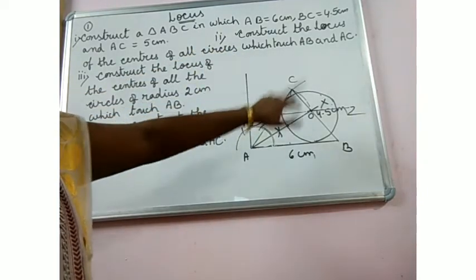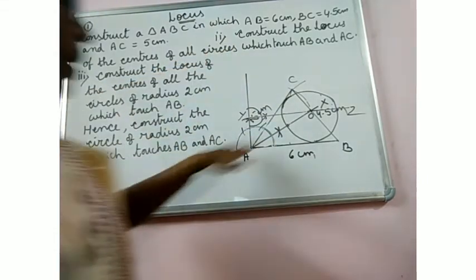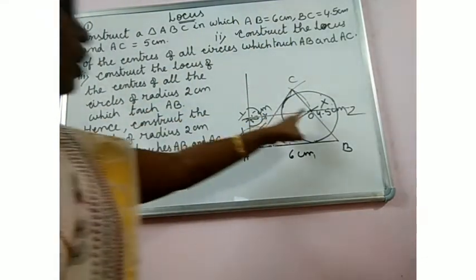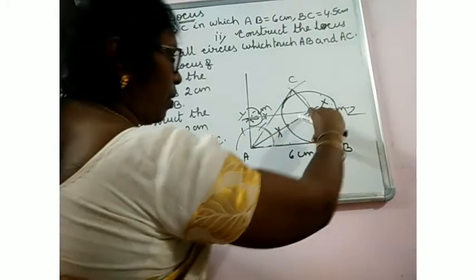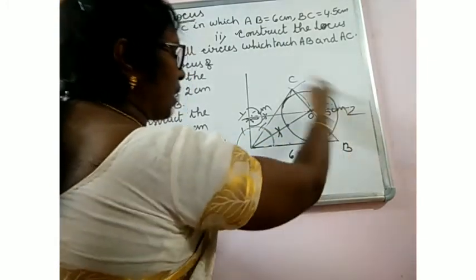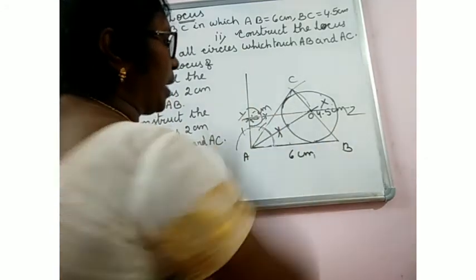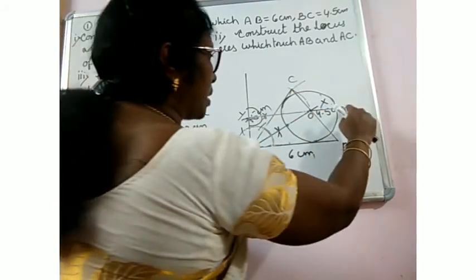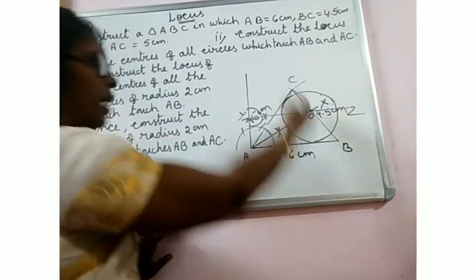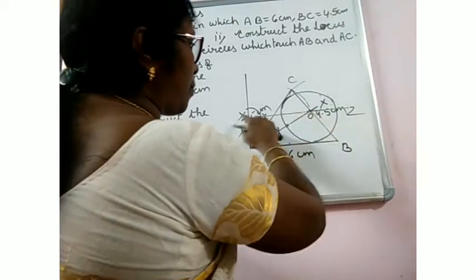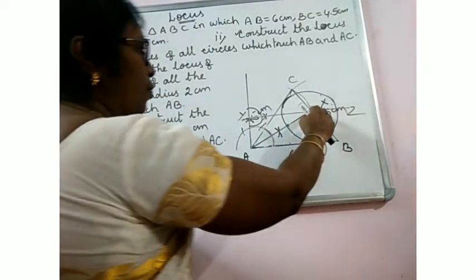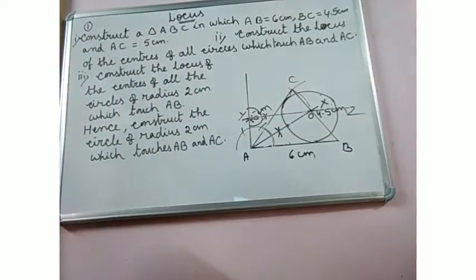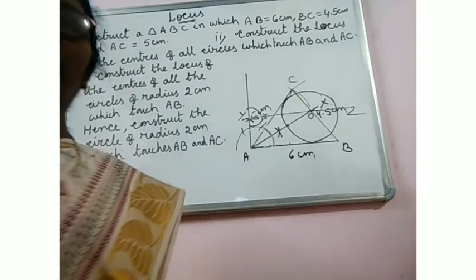To summarize: ABC is the required triangle. AX is the required locus for the second part. YZ is the required locus for the third part. O is the center, and having radius 2cm, when we construct the circle, it touches AB and AC — because every point on the bisector is equidistant from AB and AC, and YZ is the line 2cm from AB, and O is the point of intersection of these two lines.